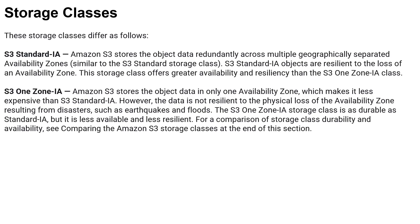Moving forward, you have S3 Standard-IA and One Zone-IA. Standard-IA means the data is stored redundantly across multiple geographically separated availability zones. It's not as instantly accessible as Standard storage, but it's available across different availability zones and provides resilient features. One Zone-IA is confined to a single zone, making it less available but also cheaper.